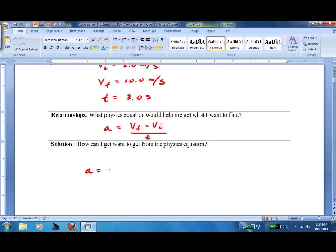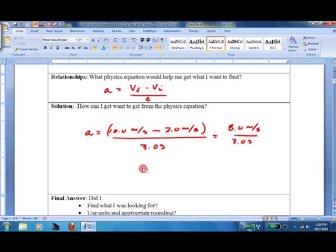10 meters per second minus 2 meters per second. I like to put parentheses around there, so I don't mess it up. Over 3 seconds equals 8 meters per second in 3 seconds. Put in the calculator, we will get 2.7, that's rounded, meters per second squared.